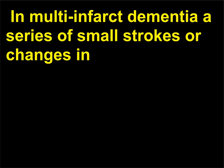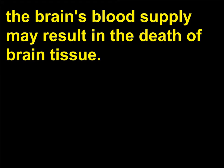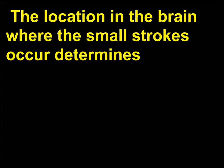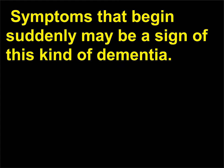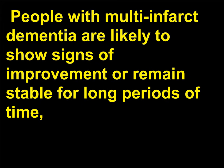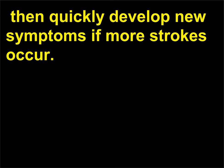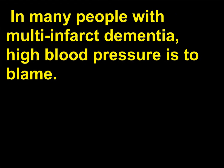In multi-infarct dementia, a series of small strokes or changes in the brain's blood supply may result in the death of brain tissue. The location in the brain where the small strokes occur determines the seriousness of the problem and the symptoms that arise. Symptoms that begin suddenly may be a sign of this kind of dementia. People with multi-infarct dementia are likely to show signs of improvement or remain stable for long periods of time, then quickly develop new symptoms if more strokes occur. In many people with multi-infarct dementia, high blood pressure is to blame.